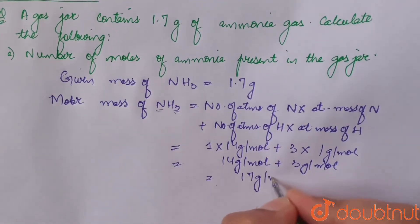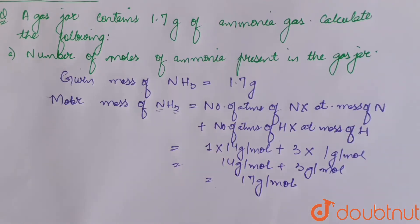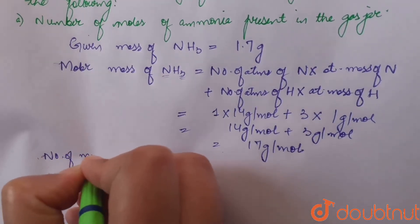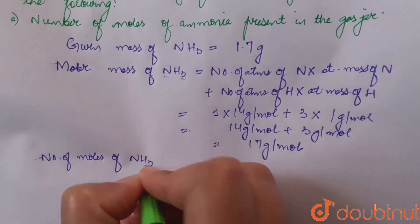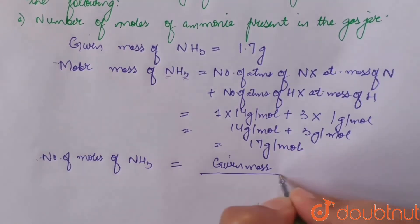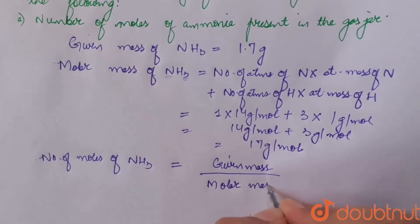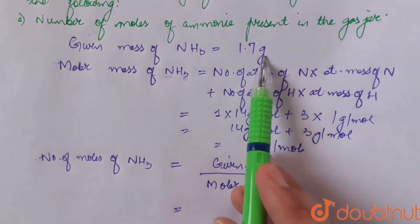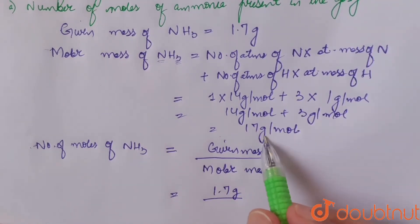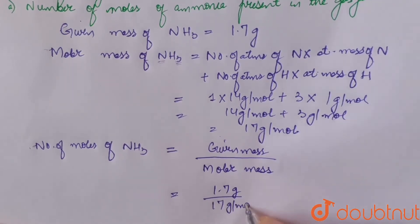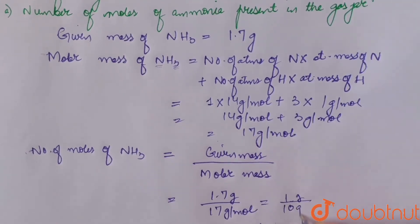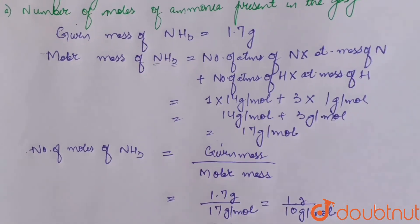So the molar mass of ammonia is 17 g/mol. Now, the number of moles of ammonia in the gas jar equals given mass divided by molar mass. Given mass is 1.7 grams and molar mass is 17 g/mol. So that equals 1.7 divided by 17, which equals 1/10, and that equals 0.1 mole.